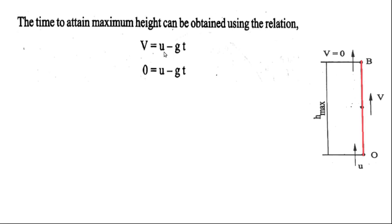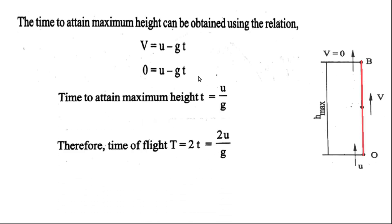For time to attain maximum height, we use the equation v = u − gt for upward direction. Setting v = 0, we get 0 = u − gt, so the time to attain maximum height t = u/g. The time of flight is the total time from ground to maximum height and back to ground, so time of flight T = 2t = 2u/g.